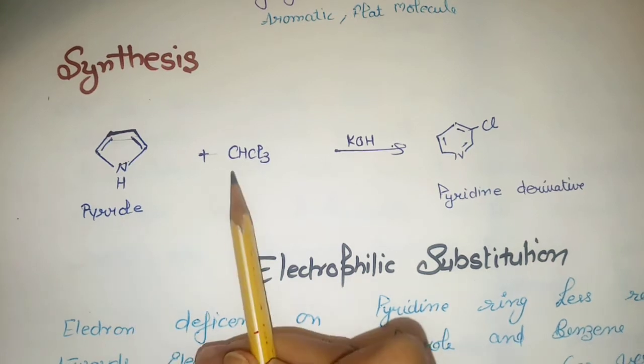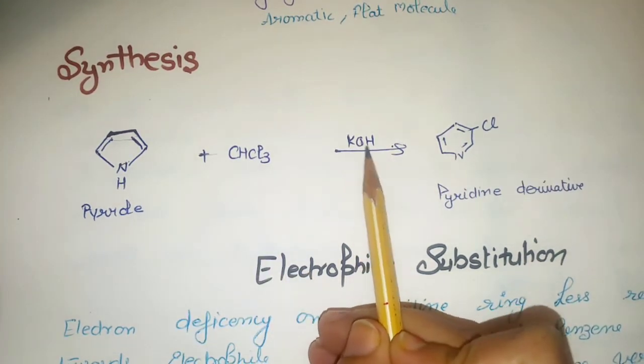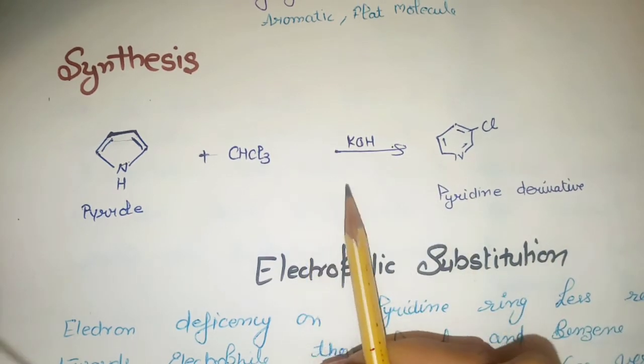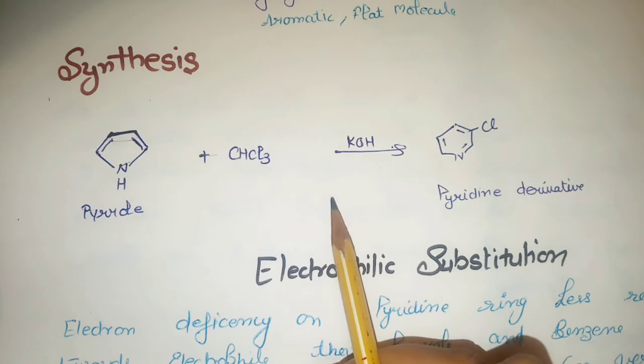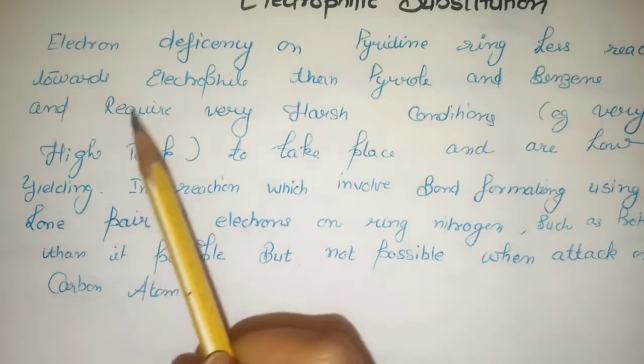Let's see the synthesis. Normally we can synthesize it from any ring. Like CHCl3 with pyrrole in the presence of KOH gives pyridine derivative.